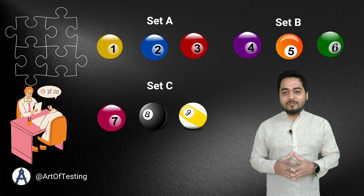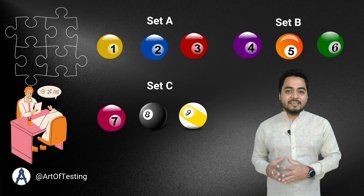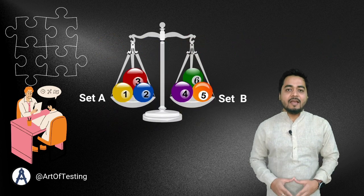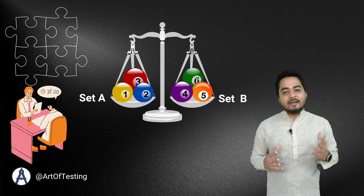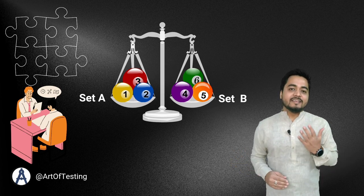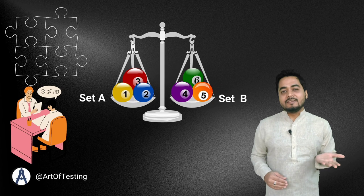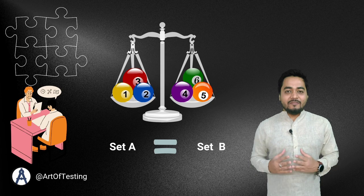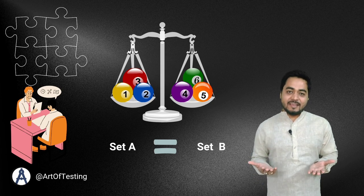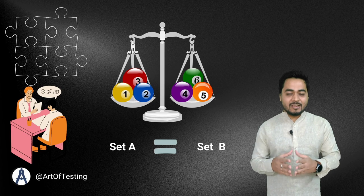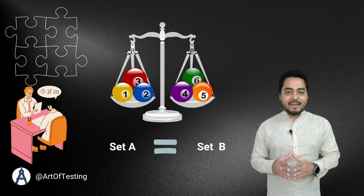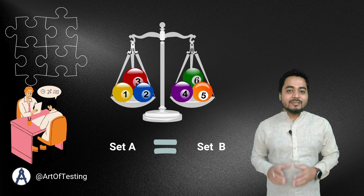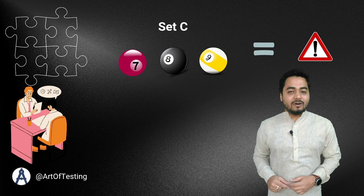So you have set A with 3 balls, set B with 3 balls, and set C with 3 balls. You pick up set A and set B and place them on either side of the balance — set A on side 1, set B on side 2. Now, if the weight of the balance is in equilibrium or equal, it means that set A and set B have balls with equal weights, so set C has that faulty ball.